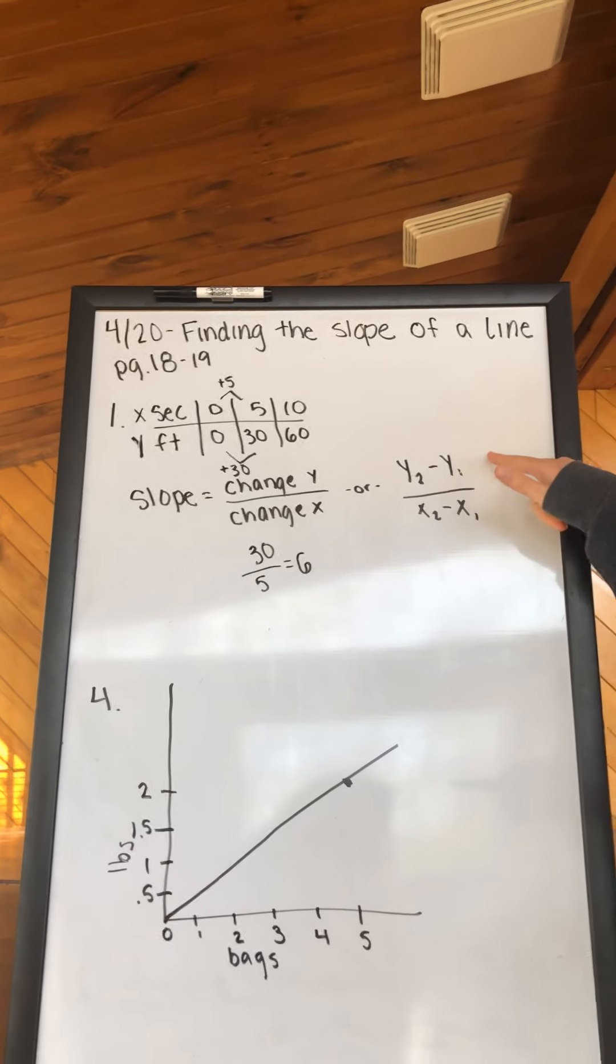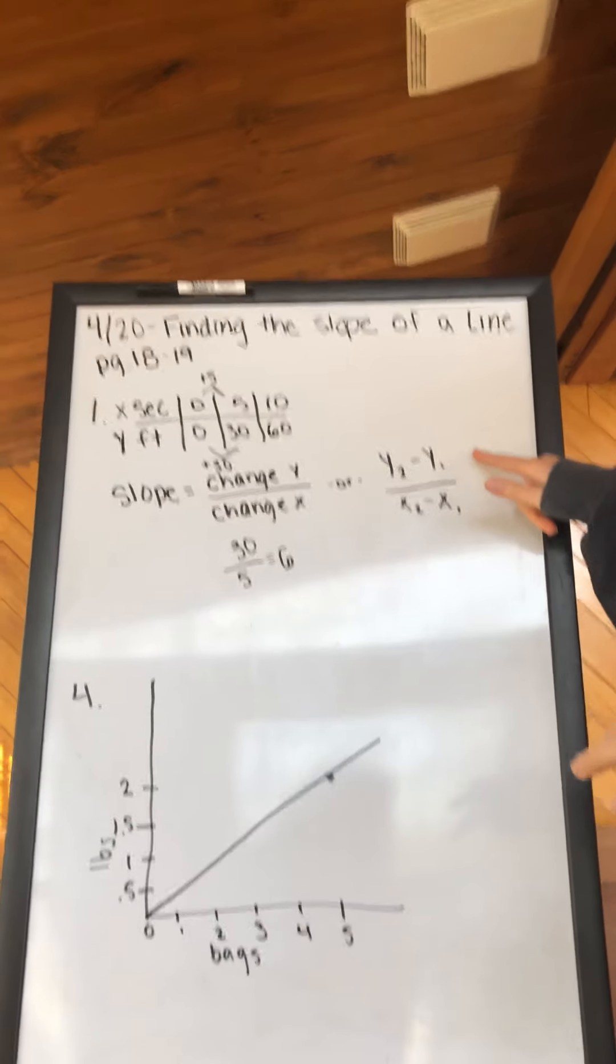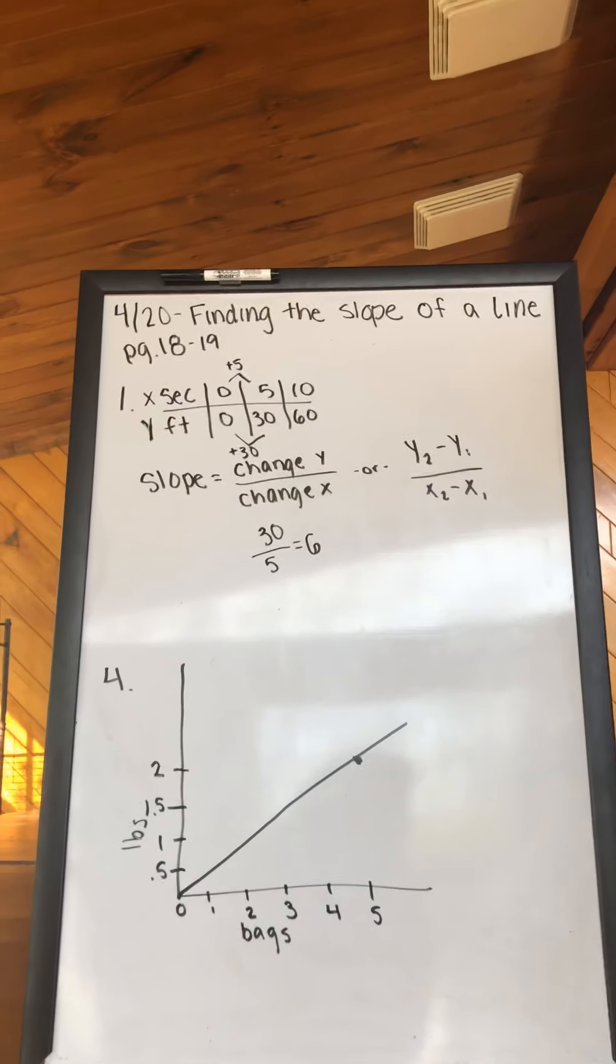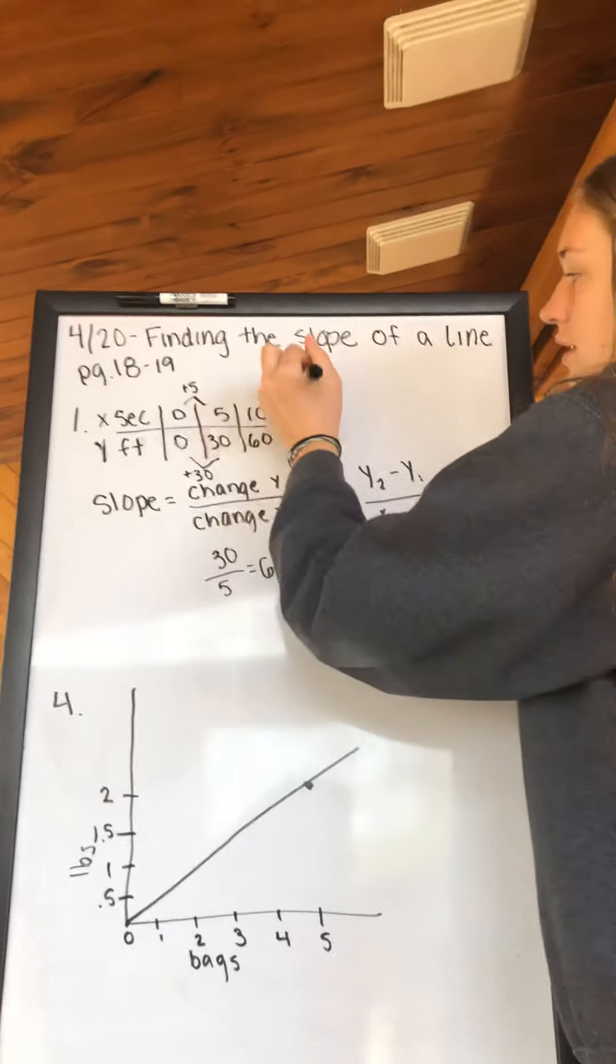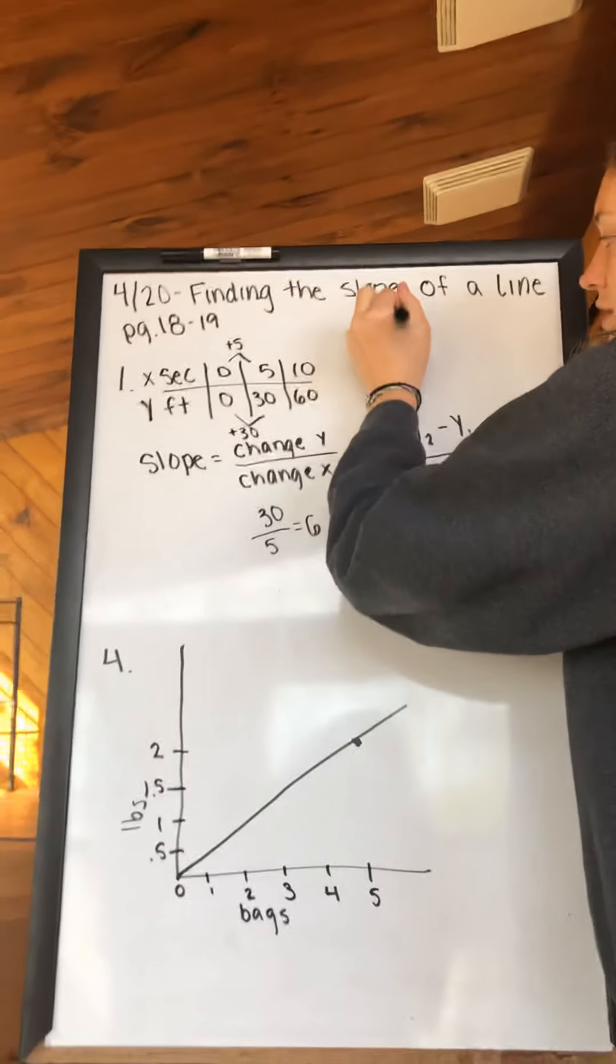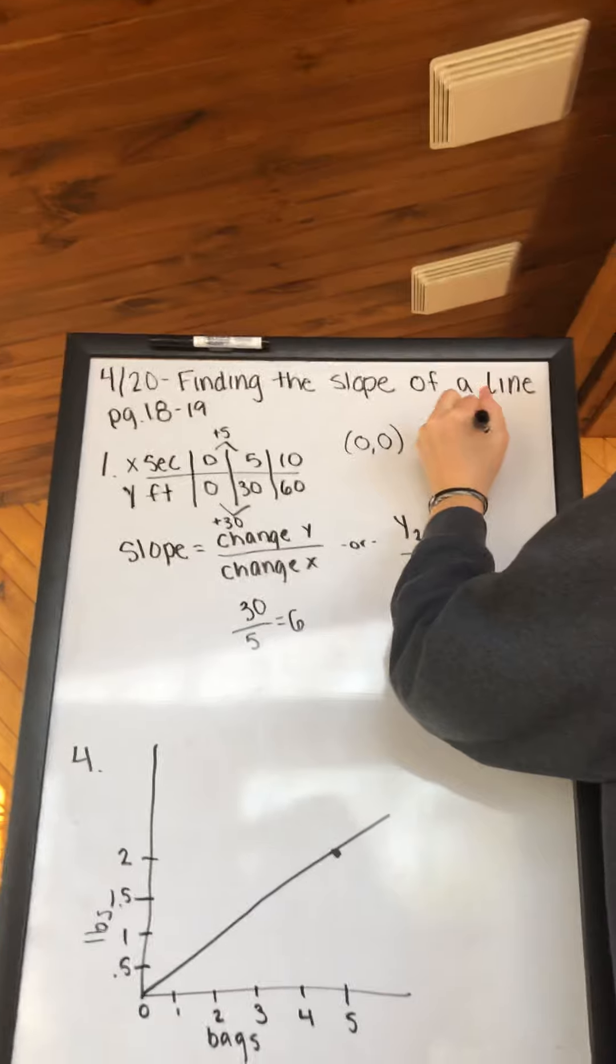Another way that you can do it is using the formula y2 minus y1 over x2 minus x1. To use this formula you need two points. So let's use the points (0, 0) and (5, 30).